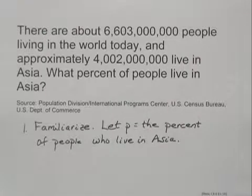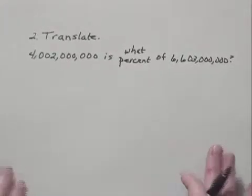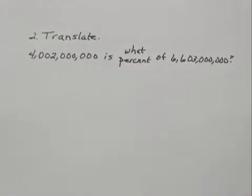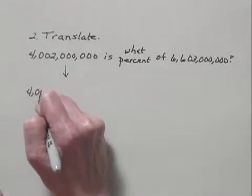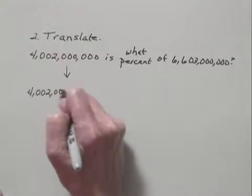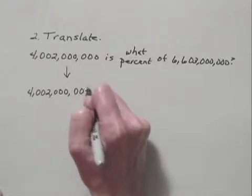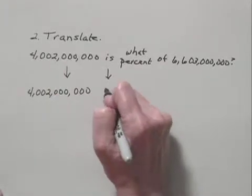Now, we need to use this variable in some kind of a mathematical sentence so that we can find a solution. We'll do that in the translate step, step number two. This is the question we're trying to answer: 4,002,000,000 is what percent of 6,603,000,000? So let's go ahead and translate. We have 4,002,000,000 is, translates as equals.